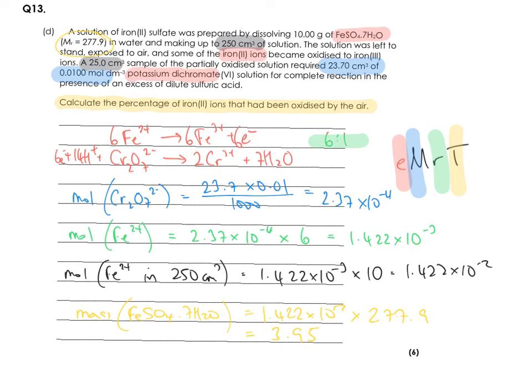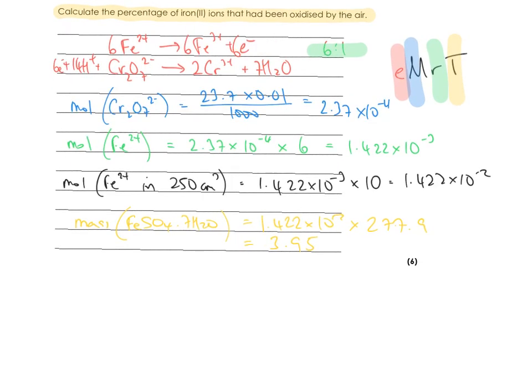So that means those 3.95 grams of iron sulfate left after the iron 2 had been oxidized by air. So the amount of iron 2 that was oxidized by air out of the 10 grams would be 10, or if we go back to black, so you can see it 10 take away 3.95, which gives us 6.05. So the percentage would be 6.05 divided by 10 times 100, which gives 60.5%.